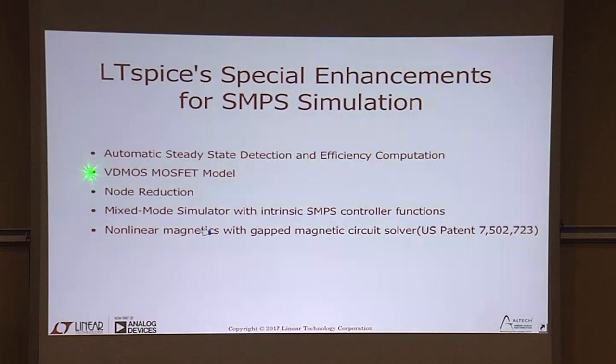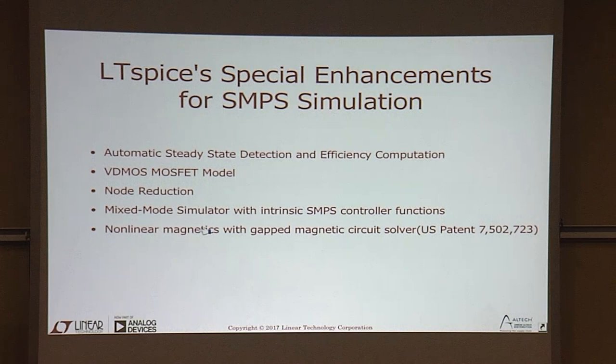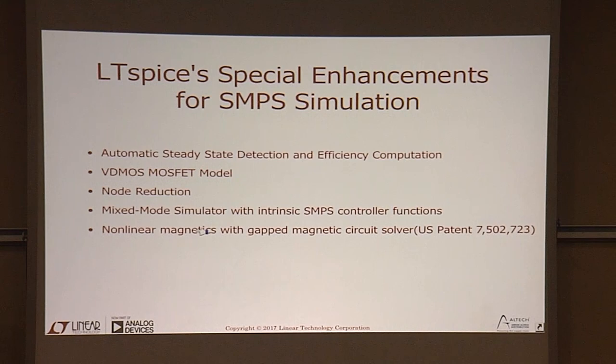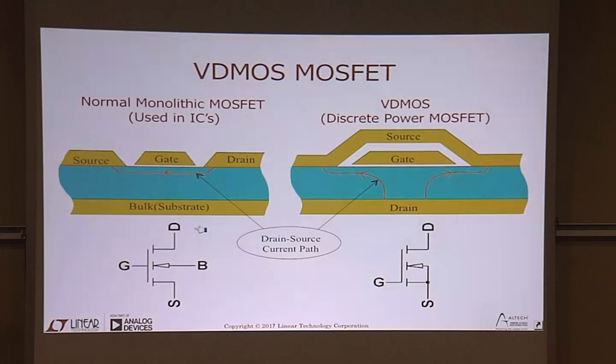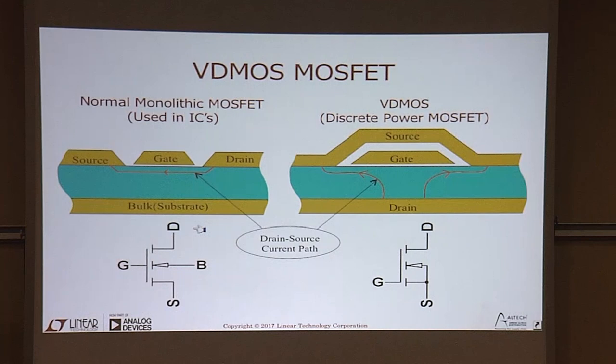There is one thing in SPICE that's nice for switchmode power supplies: it actually has a power MOSFET. That's the most important thing — there is a circuit element that behaves like a power MOSFET. The power MOSFET is very different than a monolithic MOSFET. This is the cross-section of the monolithic MOSFET — by monolithic, I mean lithographed on a piece of silicon. This is a monolithic MOSFET and that's a discrete power MOSFET.